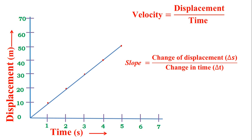The velocity of the body is represented by the slope, and the slope can be calculated by using the change of displacement, denoted by Delta s, divided by the change in time, Delta t. This gives us the slope, and the slope represents the velocity of a body moving with uniform velocity.